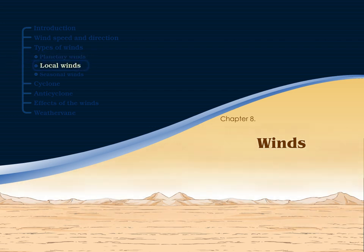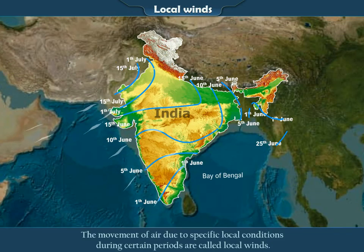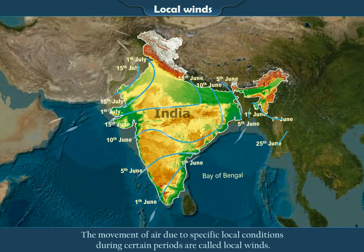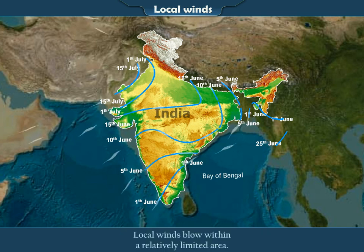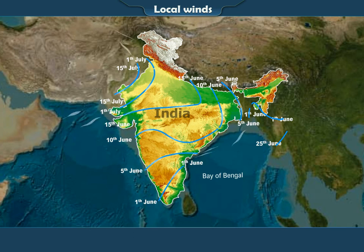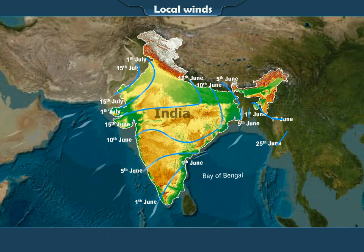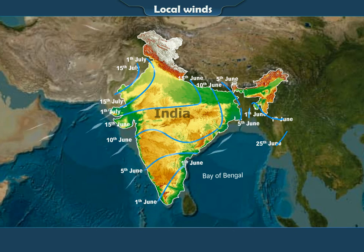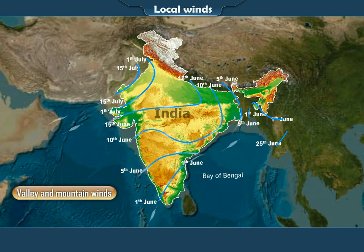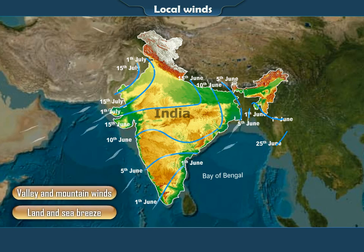Local Winds. The movement of air due to specific local conditions during certain periods are called local winds. Local winds blow within a relatively limited area, and their effect is seen on the climate of the region where they blow. These winds are known by various names. The two main types are: A. Valley and mountain winds, and B. Land and sea breeze.